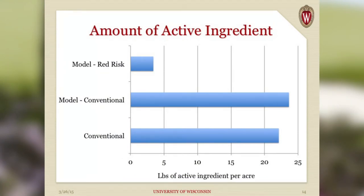One way to measure risk is the amount of active ingredient applied with each program. The conventional program applies about 22–23 pounds of active ingredient per acre. Using the model with conventional fungicides — two fewer applications — we're actually higher in active ingredient per acre. The reason is one additional application of Daconil Weatherstik, which is chlorothalonil, a high active ingredient application. That's what really drives the amount of active ingredient applied.